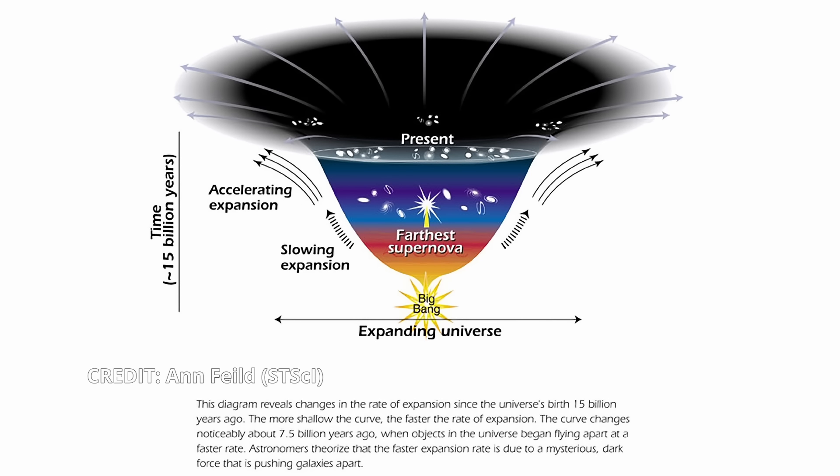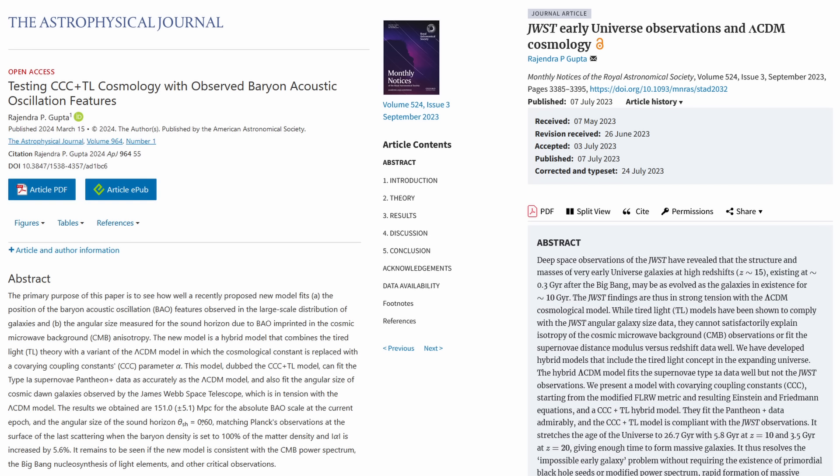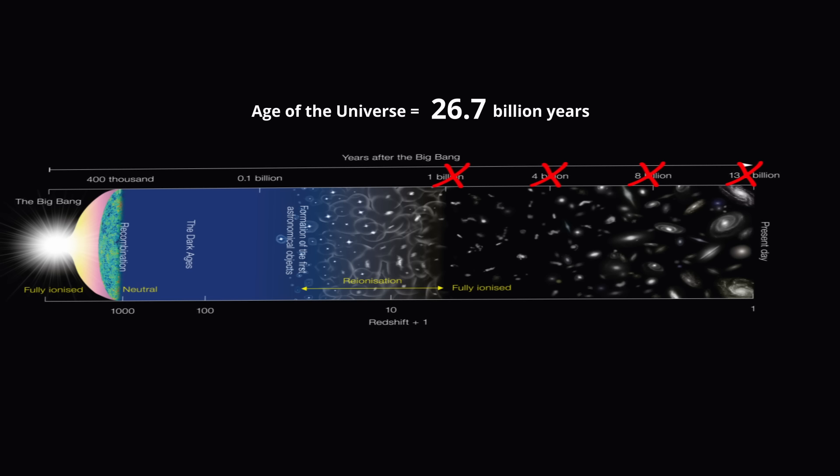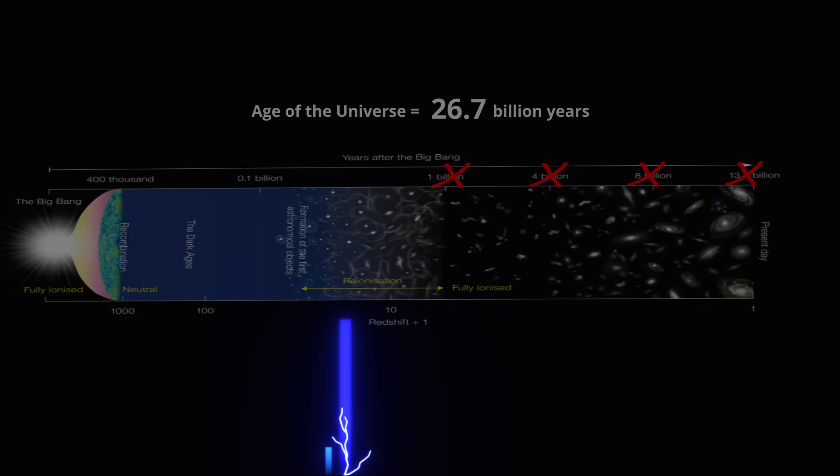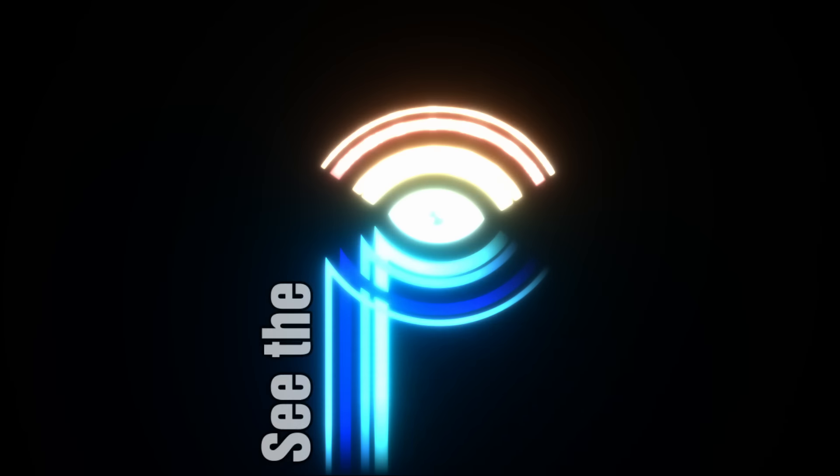Concurrently, measurements of the universe's expansion rate suggest an acceleration, prompting the introduction of enigmatic concepts like dark energy to explain this phenomenon. Now, a controversial new paper is shaking the foundations of cosmology by proposing a radical shift, doubling the age of the universe while eliminating the need for both dark matter and dark energy. Join me as we delve into this provocative theory and explore its implications for our understanding of the cosmos.